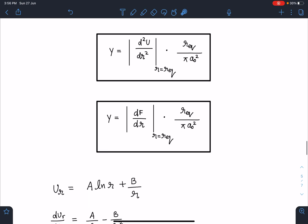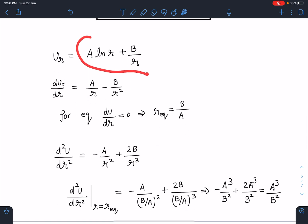Now, the given function was A ln r + B/r. Let's differentiate. We will get dU/dr. For equilibrium, dU/dr is zero, so we are getting r_eq = B/A, where A and B are some positive constants. Here I can write double derivative - one more time I'll differentiate it. I'll be getting -A/r² + 2B/r³. If I substitute this r_eq in this expression, I'll be getting double derivative of potential energy at equilibrium, which will come as A³/B².